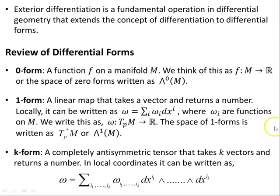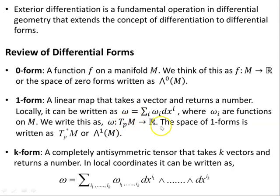A one form is a linear map that takes a vector and returns a number. Locally, it can be written as omega equals sigma i, omega i dx i — a sum over i of omega i dx i — where omega i are functions on M, the components. We write this as omega being a map from the tangent space of the manifold at point P to the real numbers. The space of one forms is written as the dual or cotangent space, or as capital lambda one of the manifold M.